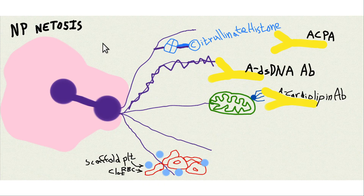Necrosis is sudden death of a cell — a big mess. Apoptosis is slow death of a cell, where the cell just disappears by gradual recycling. And NETosis is almost like a Seneca-like death — it eviscerates itself and spills its contents to the outside.